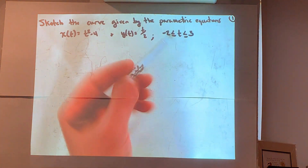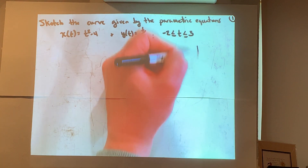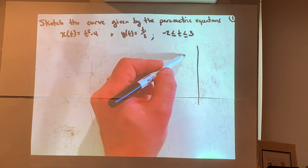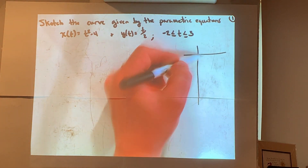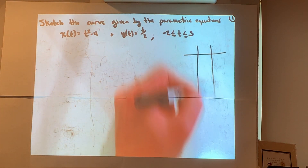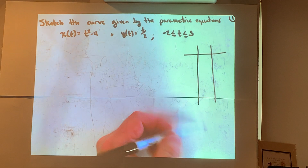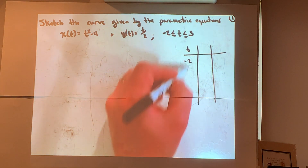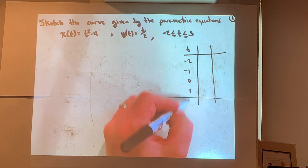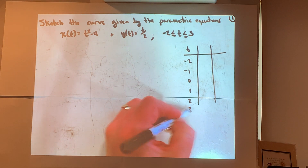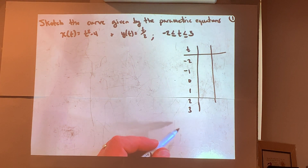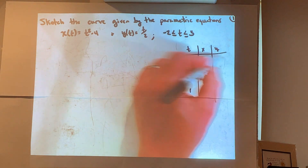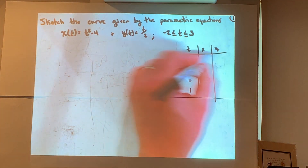We'll make a t-table with an extra column, listing t, x, and y. The t values will be −2, −1, 0, 1, 2, 3 — going in integer increments. Then we're going to figure out what x is and what y is for each, and plot those ordered pairs.